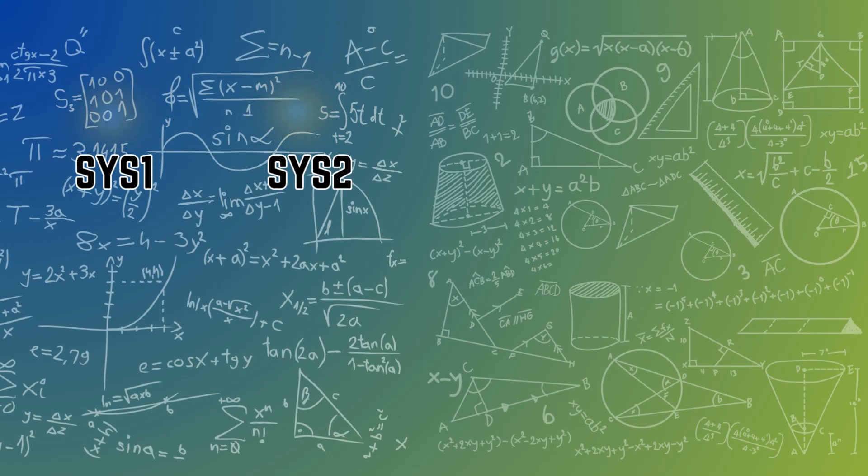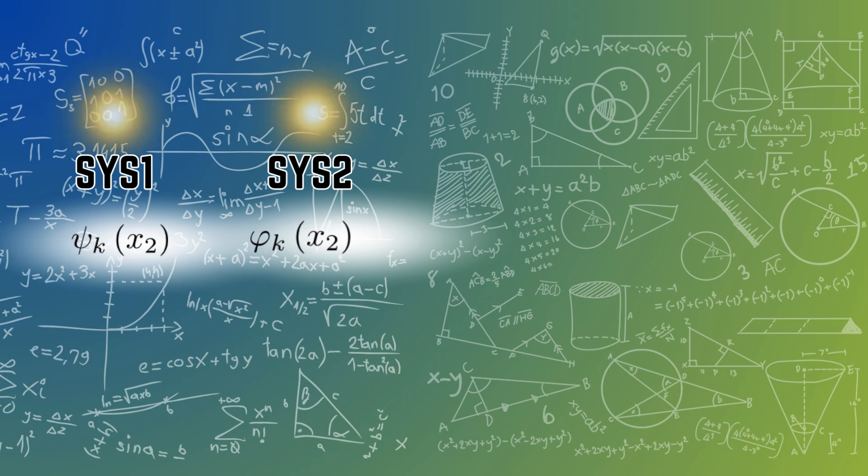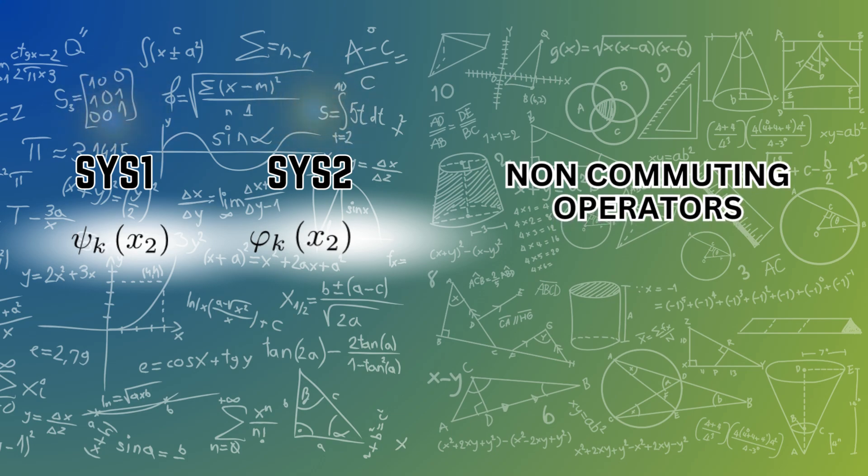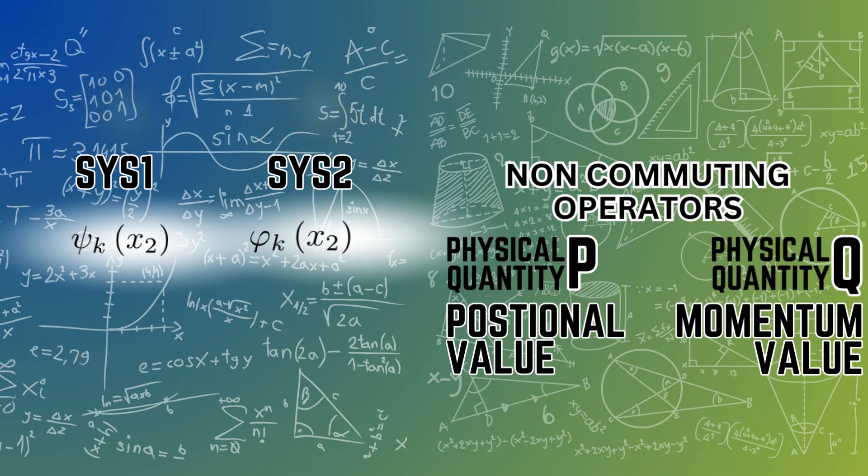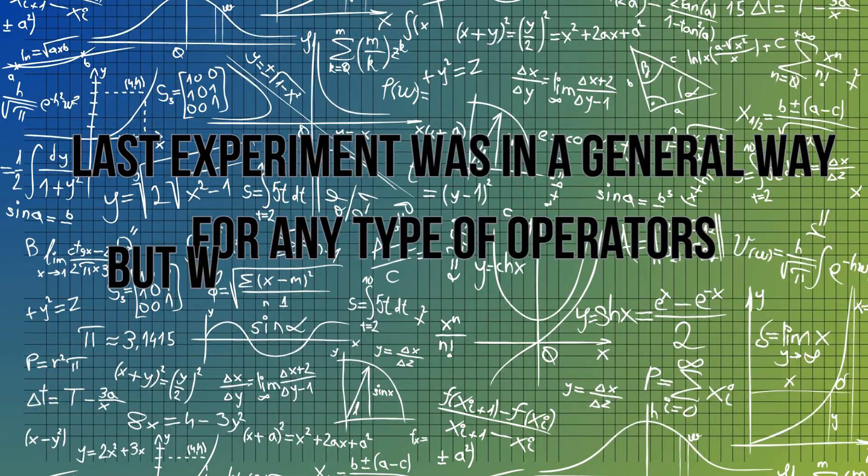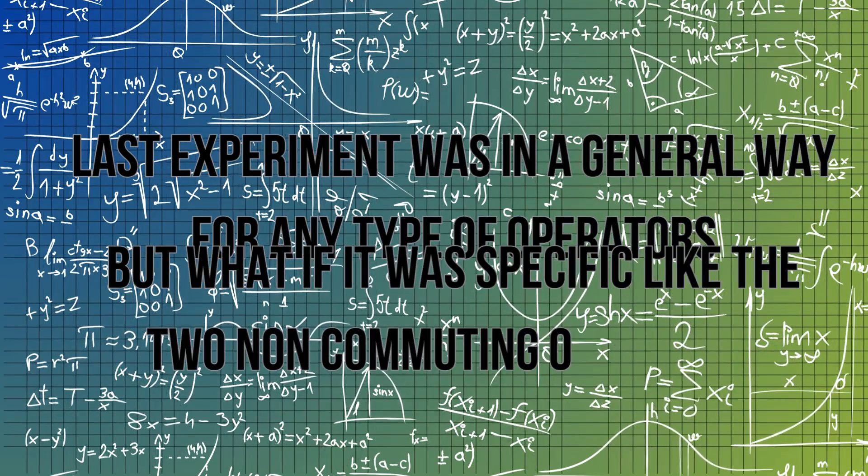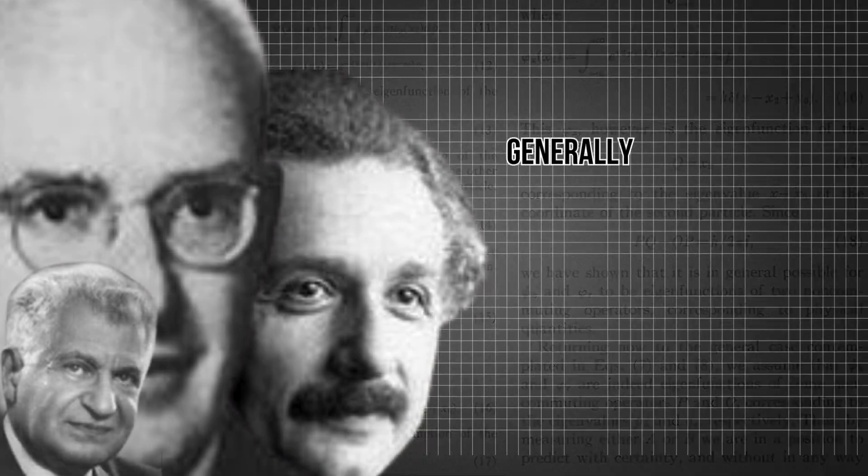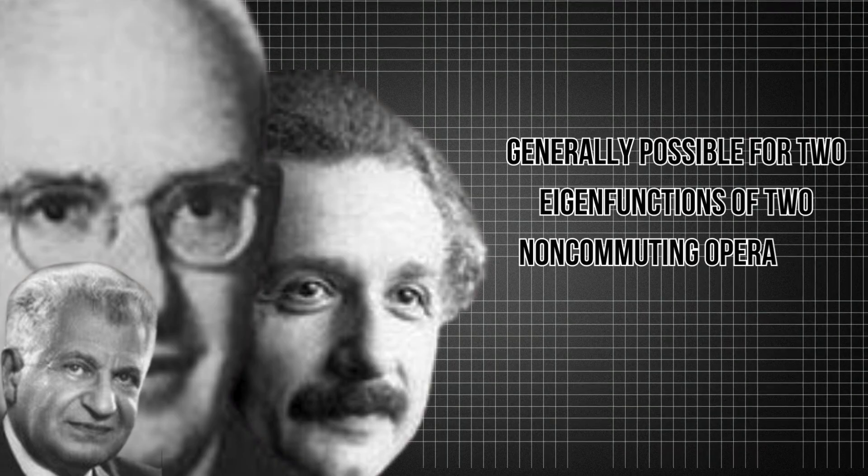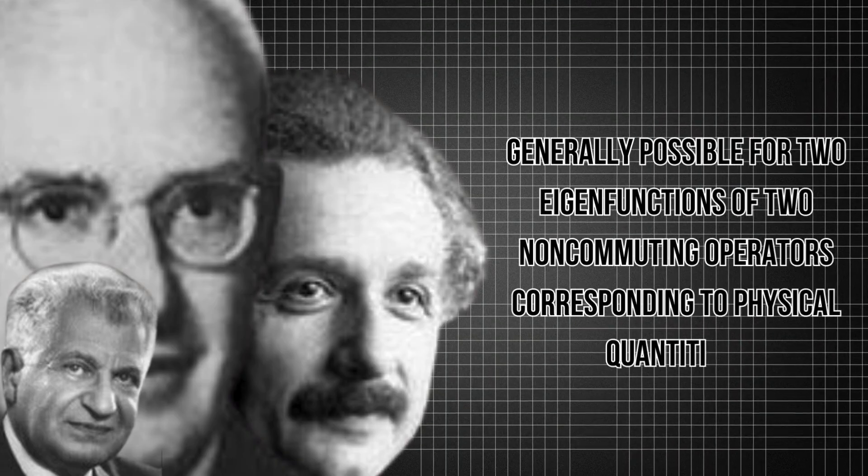Now consider these systems as particles, and there is a chance these two wave functions might be reflecting as eigenfunctions of two noncommuting operators to some physical quantities just like P and Q, as in momentum and positional value. Last experiment was in a general way for any type of operators, but what if it was specific like the two noncommuting operators? By assuming that these are two noncommuting operators, Einstein showed by mathematical derivation that it is in general possible for two eigenfunctions of two noncommuting operators corresponding to physical quantities. Now there you have it.